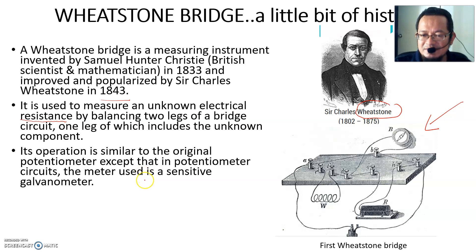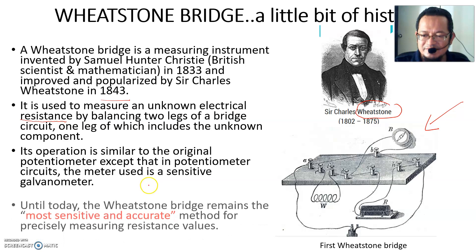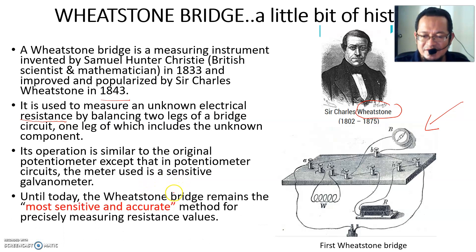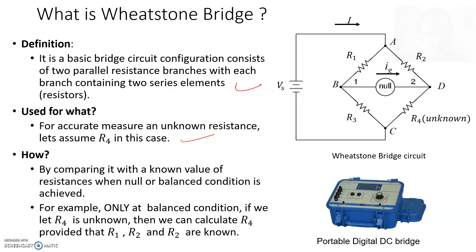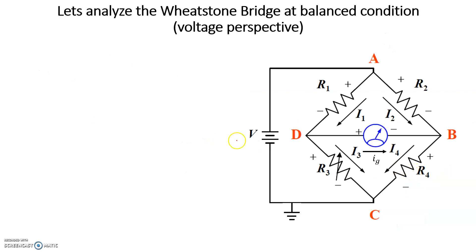It is actually similar to the original potentiometer circuit, except that a galvanometer is used. Until today, the Wheatstone bridge remains the most sensitive and accurate analog measurement for resistance. The Wheatstone bridge has two parallel resistance branches each containing two resistors — R1, R2, R3, and R4 — and it is used to determine an unknown resistance. If you know three resistors, you can calculate the fourth.